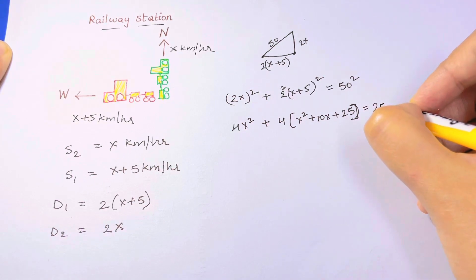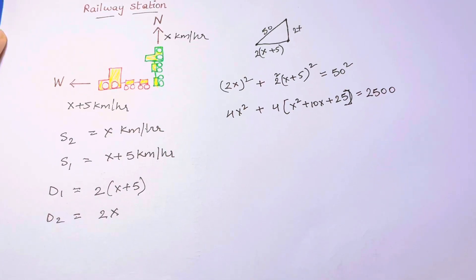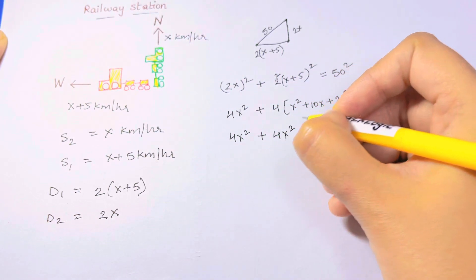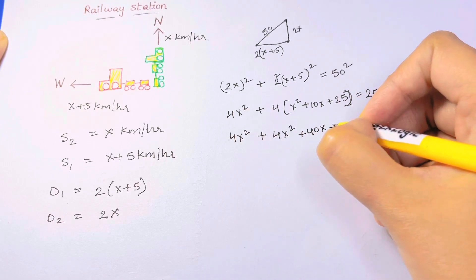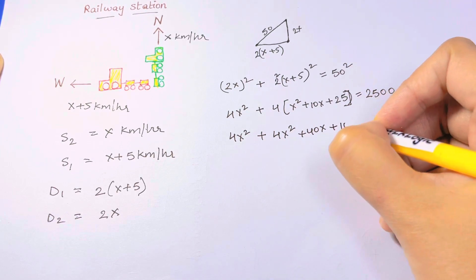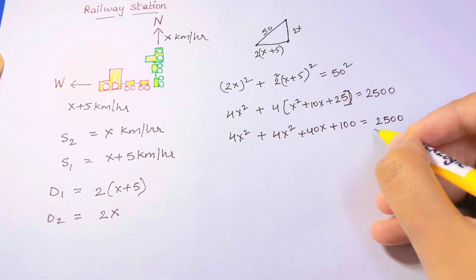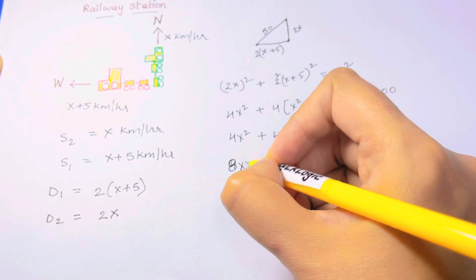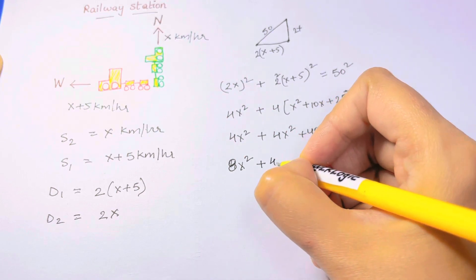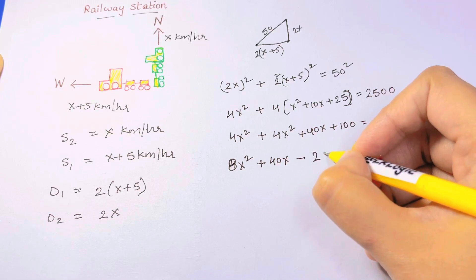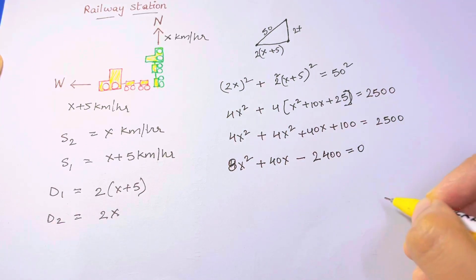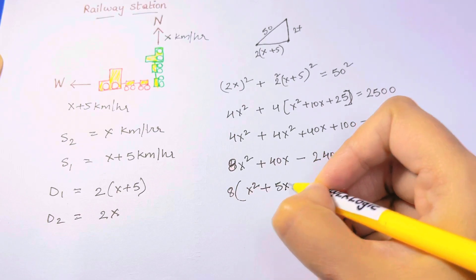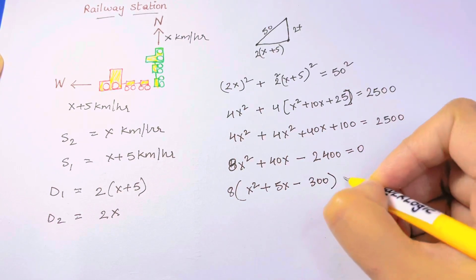Expanding further: 4x² plus 4x² plus 40x plus 100 equals 2500. Bringing all terms to one side: 8x² plus 40x minus 2400 equals zero. Taking out 8 as a common factor gives us x² plus 5x minus 300 equals zero.